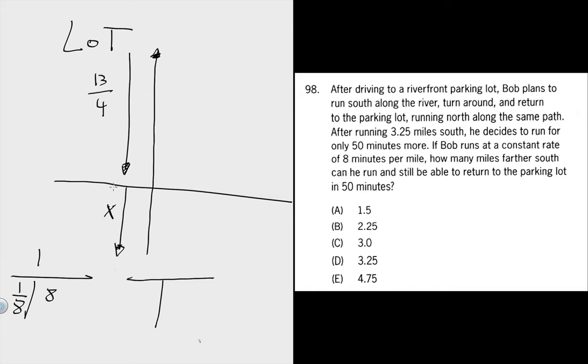And we know that x plus going all the way back took us 50 minutes at a rate of 1 mile per 8 minutes. Let's just figure out what that distance is.